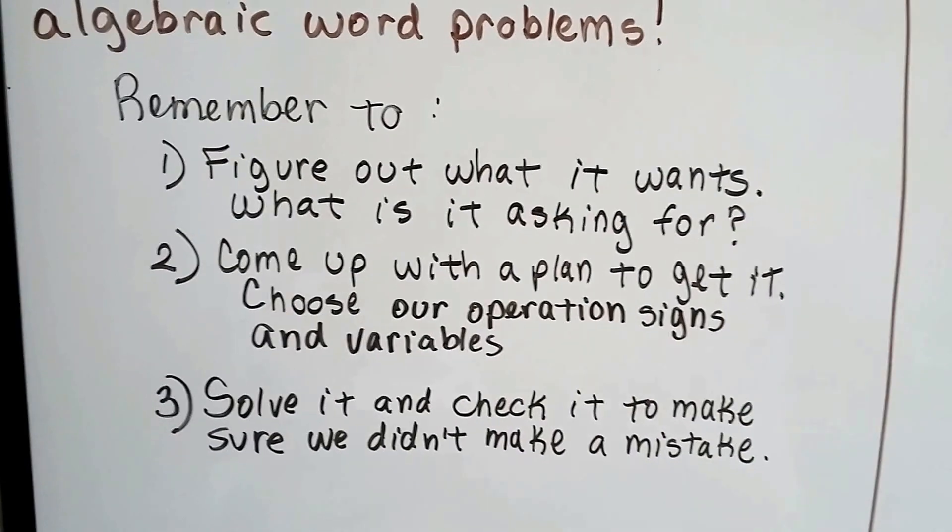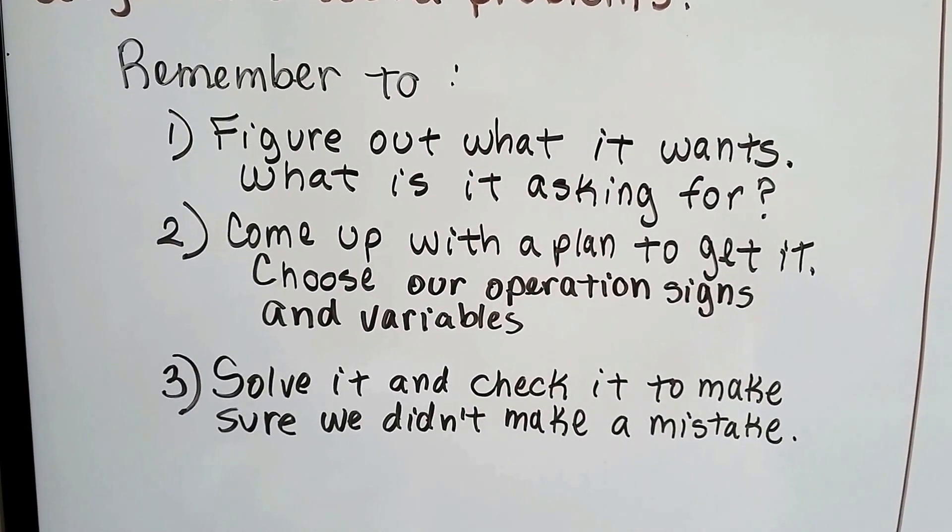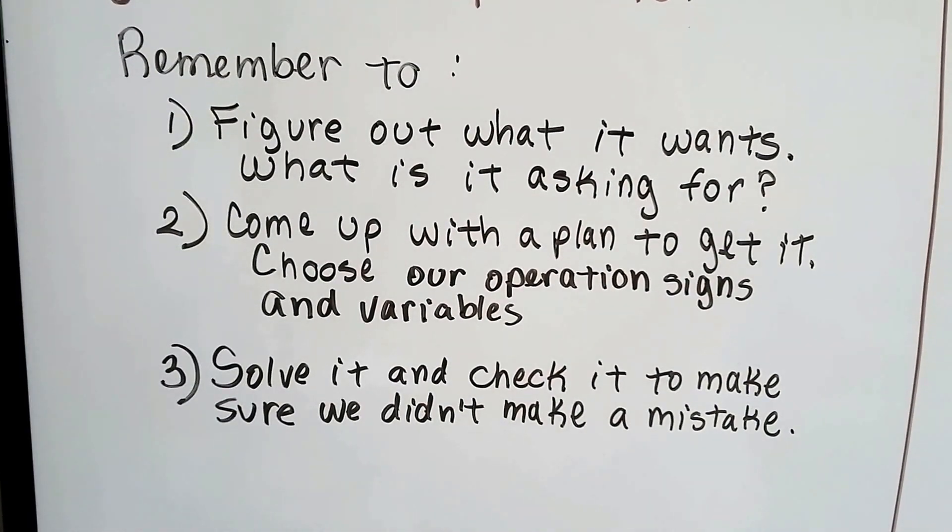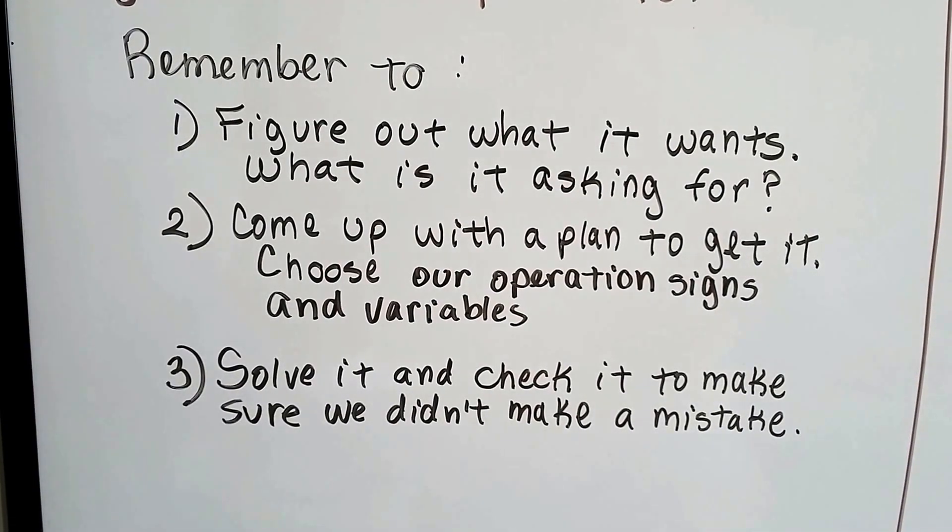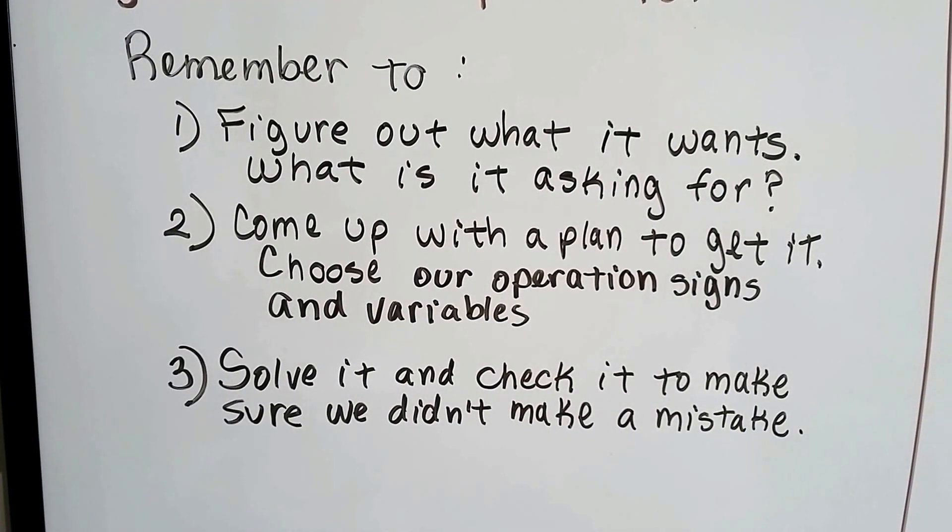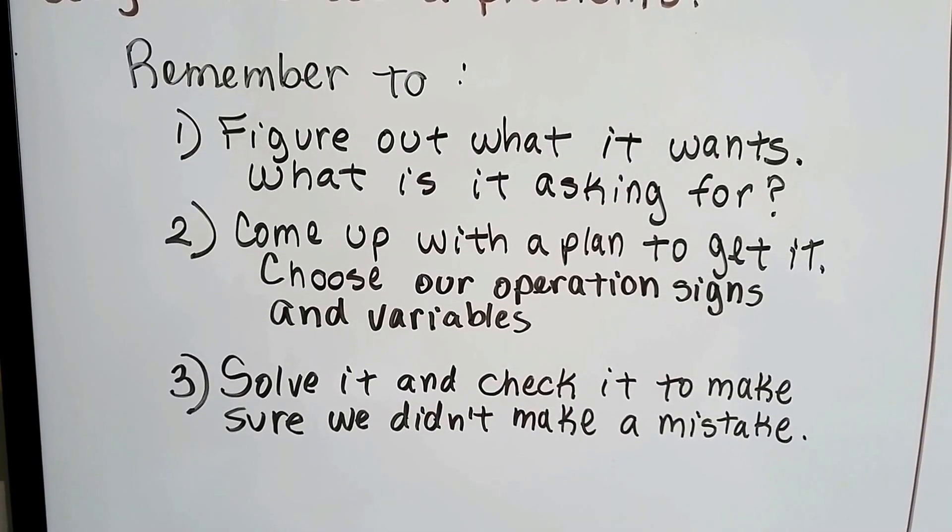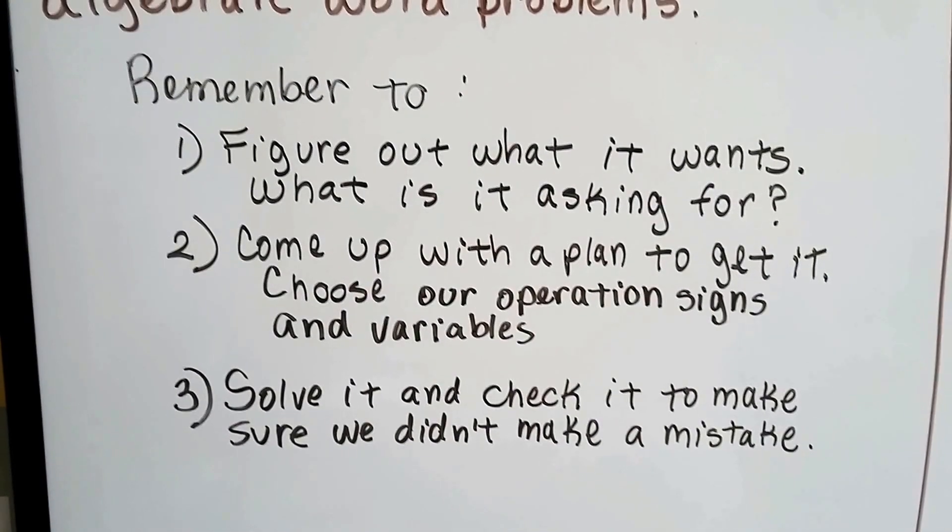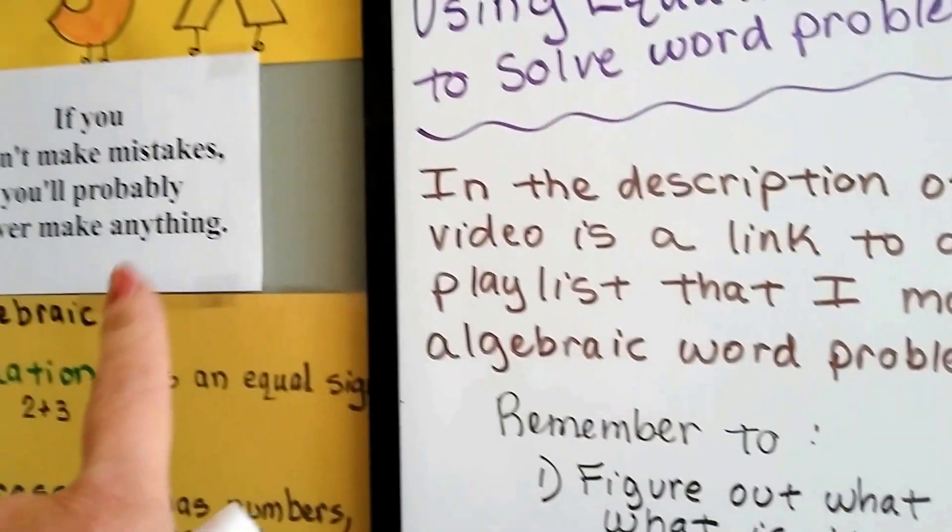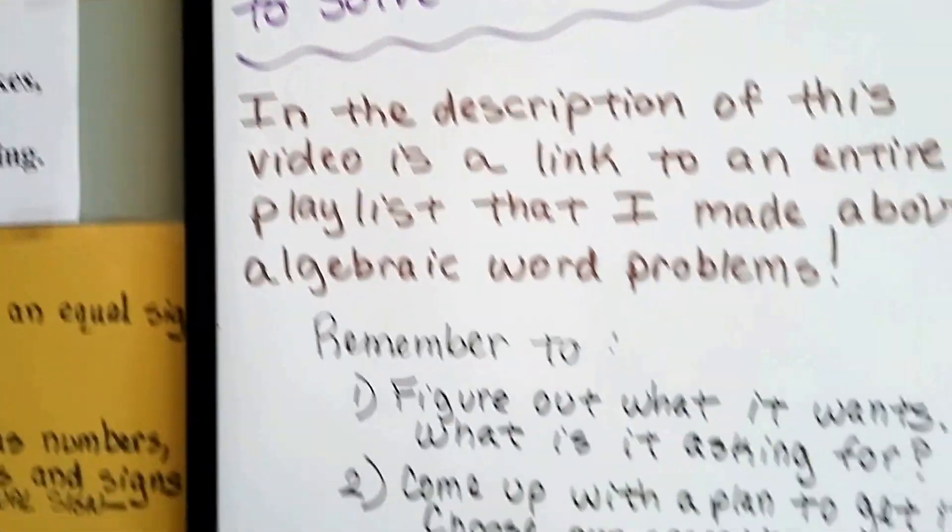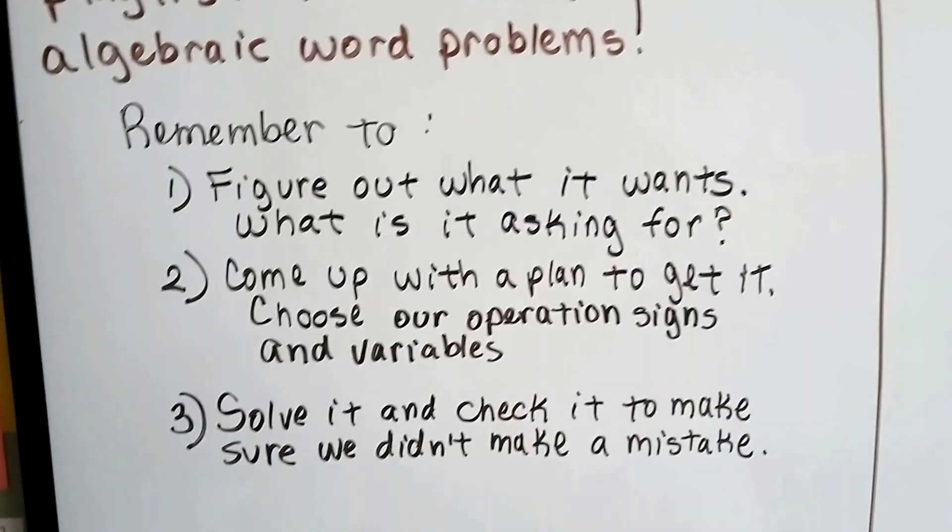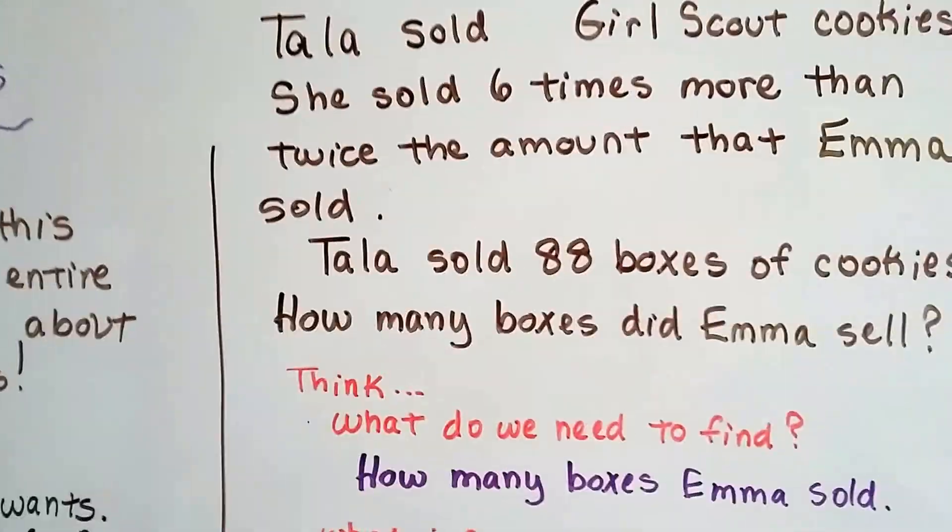We need to remember, the first thing we need to do is figure out what it wants. What is it asking for? The second thing is we come up with a plan to get it. We choose our operation signs and variables. Then we solve it and check it to make sure we didn't make a mistake because mistakes happen. Remember, if you don't make mistakes, you probably will never make anything. Everybody makes mistakes. It's no big deal.